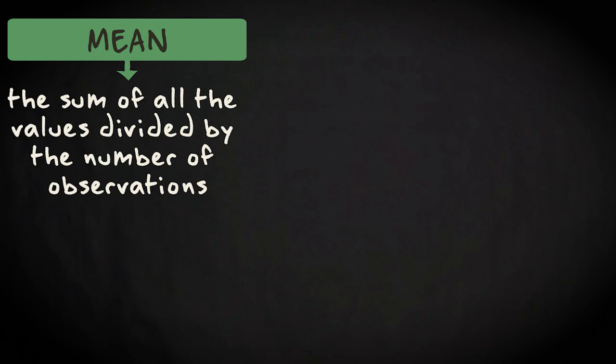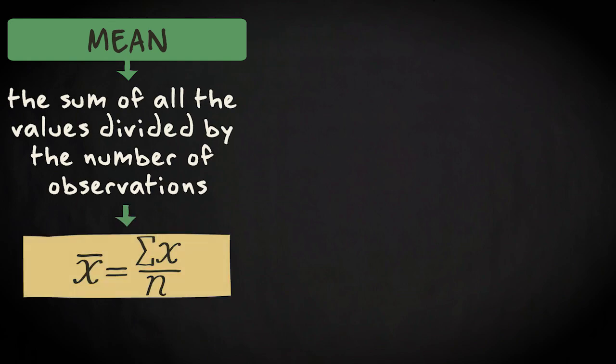The mean is the sum of all the values divided by the number of observations. This is the formula with which you can compute the mean. It looks more complicated than it is. The formula tells you that the mean of variable x, symbolized as x bar, equals the sum of all the values of x divided by the sample size, which is symbolized by n.